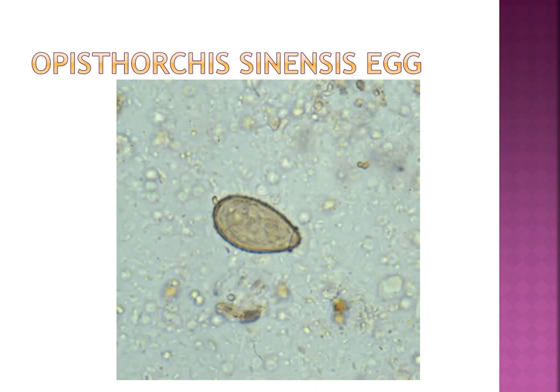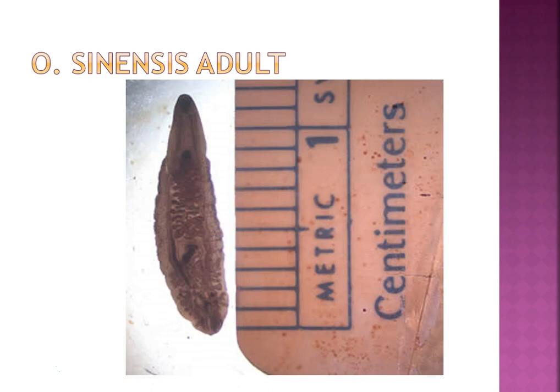Clonorchis (Opisthorchis): it has an operculum with distinct shoulders and a highland knob. It's the Chinese liver fluke. Paragonimus westermani is the oriental lung fluke. It has a prominent operculum with shoulders and no knob. The worm is red-brown in color with a cuticle with spines. It causes paragonimiasis, which mimics TB infections, so the specimen may be sputum or other lung specimens.